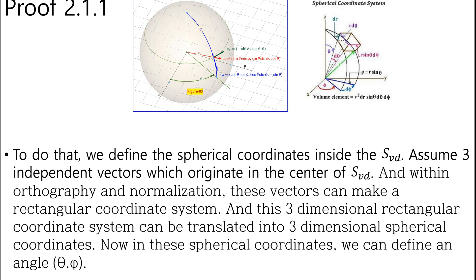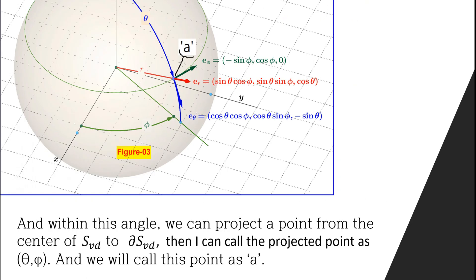Let's prove it. To do that, we define the spherical coordinates inside the SVED. We assume three independent co-factors which originate in the center of SVED, and within orthogonality and normalization, these vectors can make a rectangular coordinate system. This 3-dimensional rectangular coordinate system can be translated into 3-dimensional spherical coordinates. In this spherical coordinate, we can define an angle Zeta Phi. Within this angle, we can project a point from the center of SVED to DS3D. I call the projected point as Zeta Phi, and we will call this point as A.